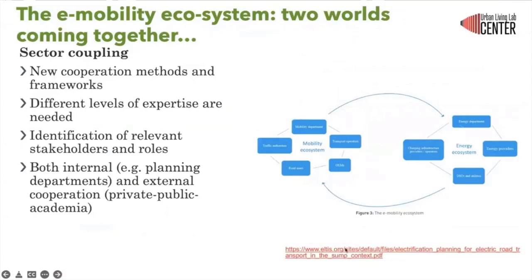The e-mobility ecosystem is typically two worlds coming together. We are looking at the mobility ecosystem — which includes mobility departments, traffic authorities, road users, and transport operators — coming together with the energy ecosystem, which covers charging infrastructure, utilities, energy providers, and energy departments.